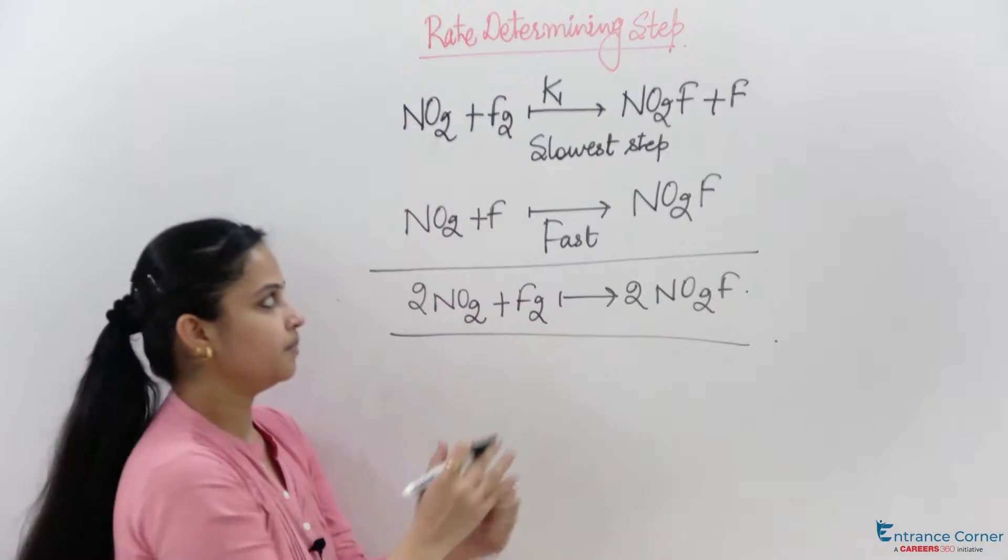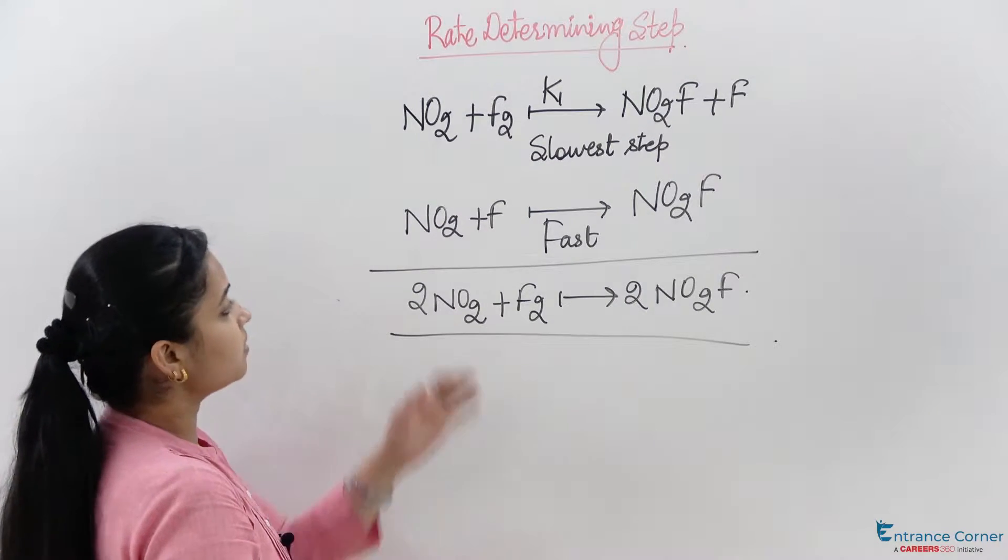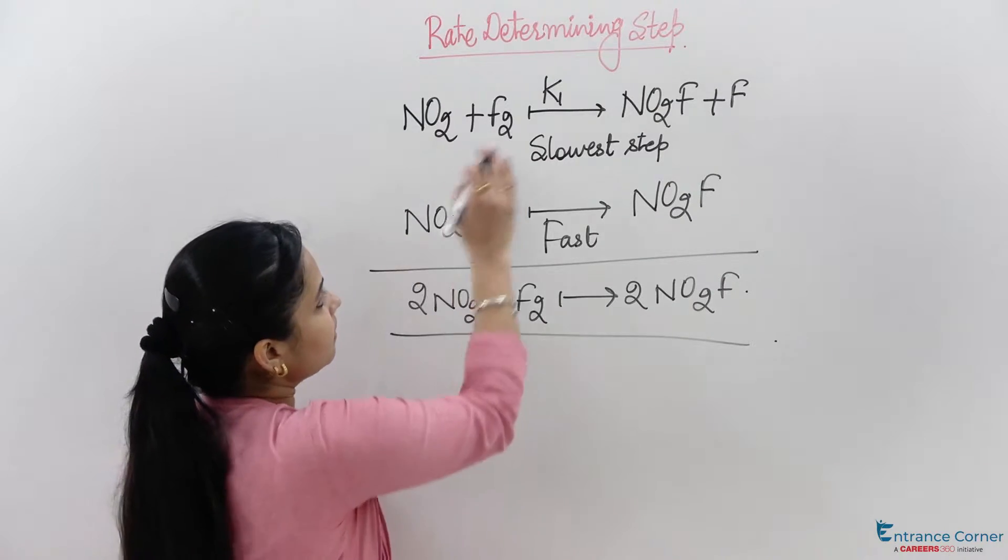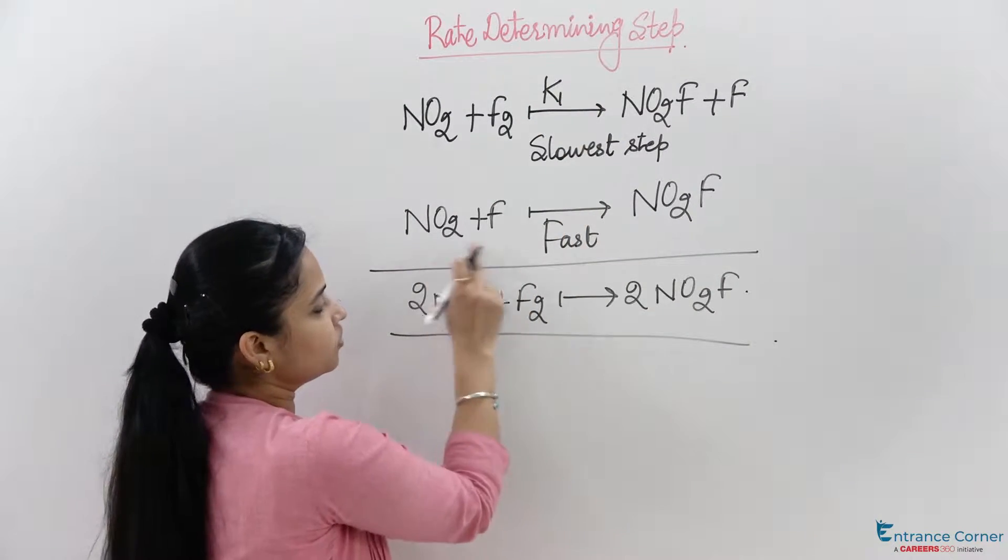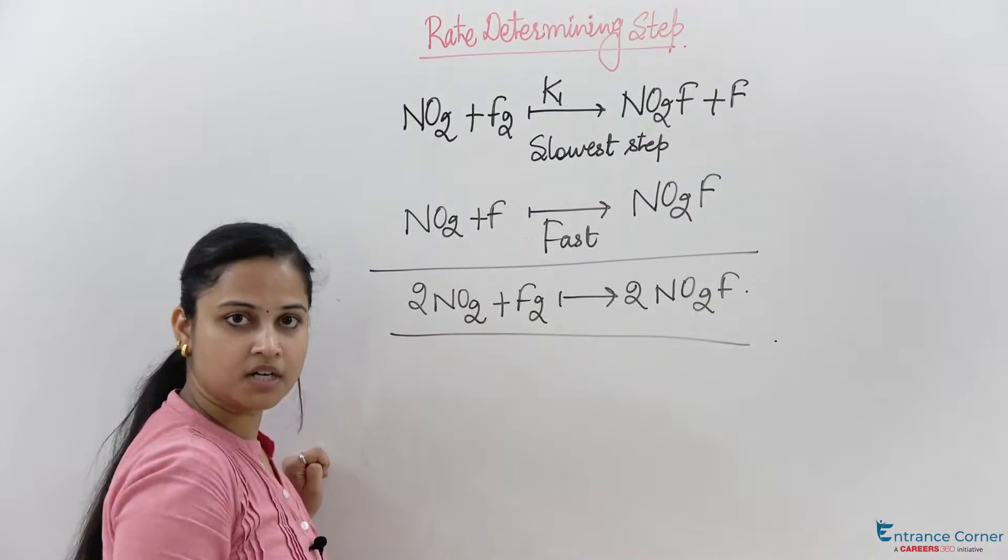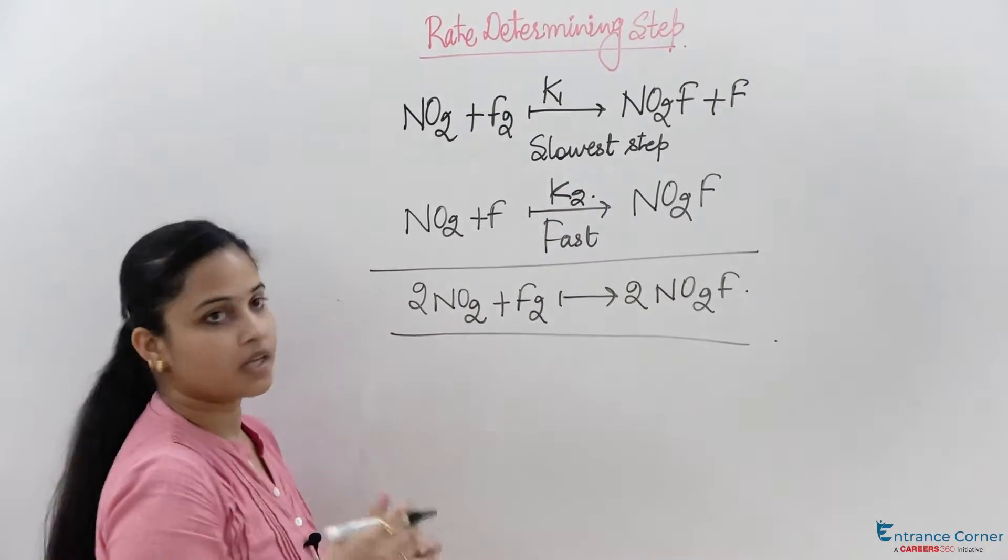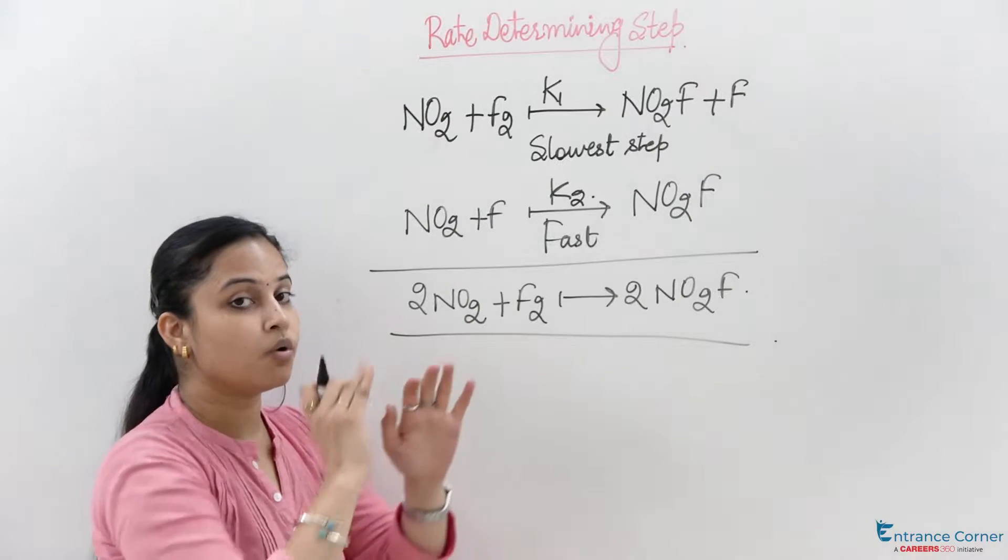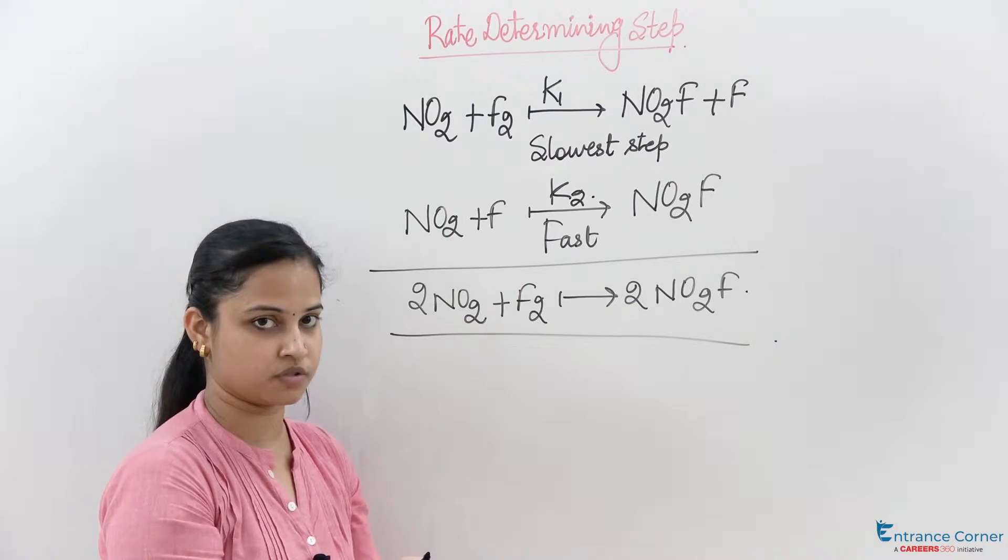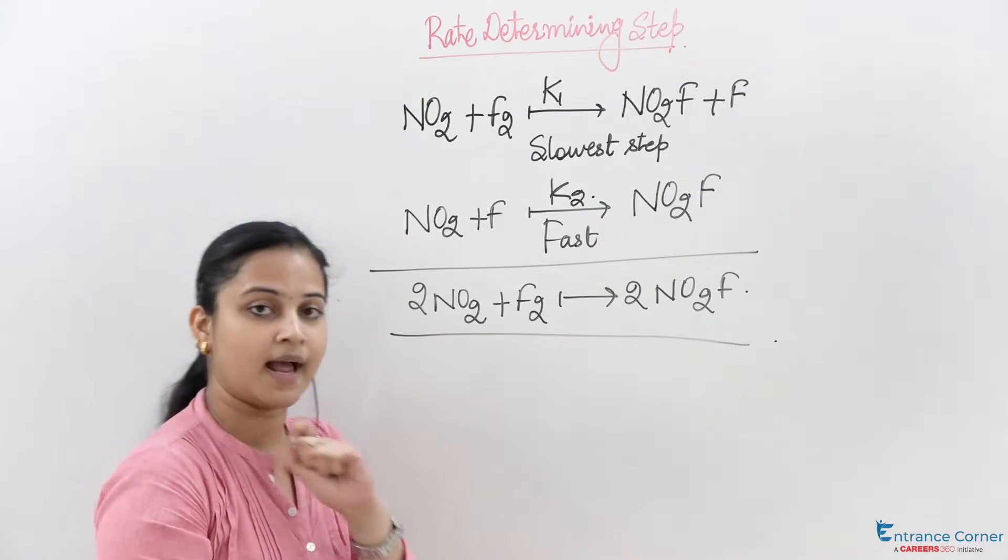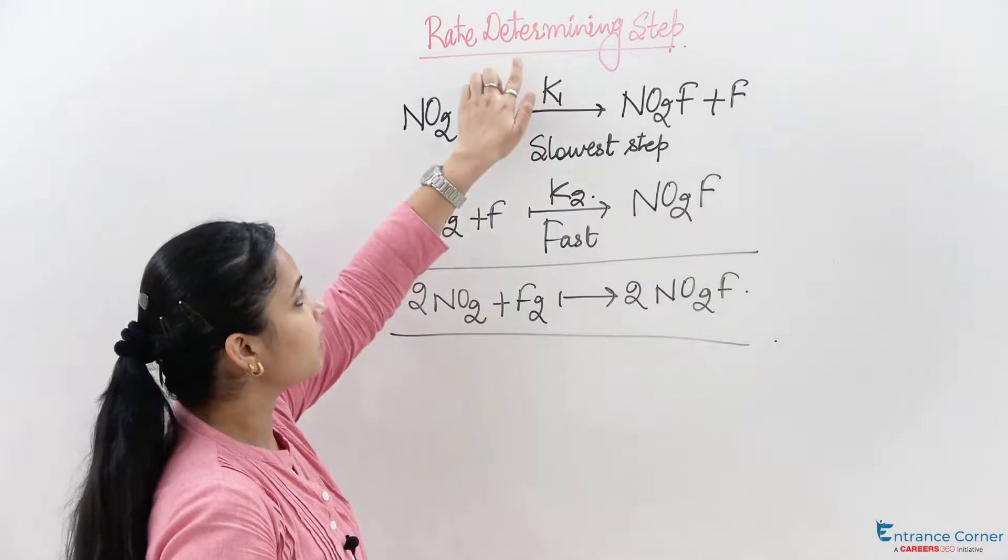For this reaction, the slowest step is the one with rate constant K1, and the fast reaction has rate constant K2. As I mentioned at the start, the overall rate of a reaction is controlled by the slowest step, which determines the rate.